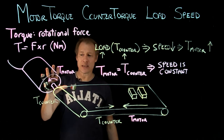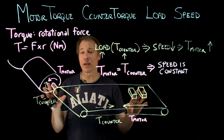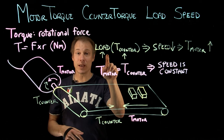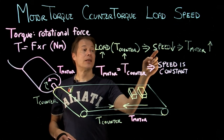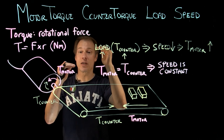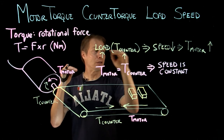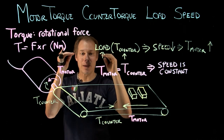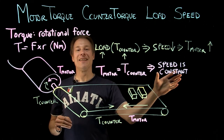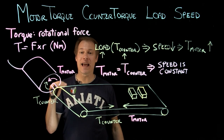Let's try that one more time with a concrete example. We have this motor running at a constant speed. I put more load on it — in this case, bricks. The load goes up, which means the counter torque goes up, and since the counter torque is now higher than the motor torque, the motor slows down. When the motor slows down, the motor torque goes up. When the motor torque reaches the counter torque, the speed becomes constant again — slower than before, but constant.